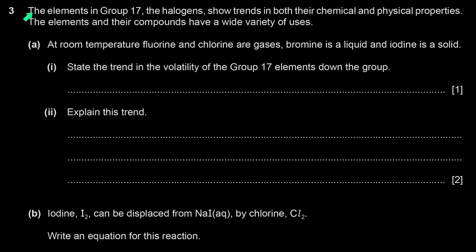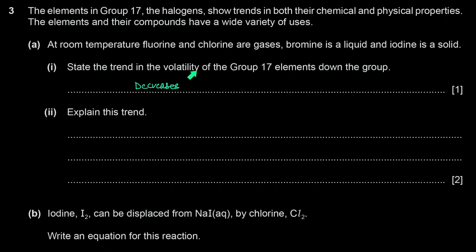Question 3: elements in Group 17 — the halogens — show trends in physical and chemical properties. At room temperature, fluorine and chlorine are gases, bromine is a liquid, and iodine is a solid. The trend in volatility down the group is decreasing — the boiling point increases down the group, so there is a lesser tendency to be in the gaseous form.